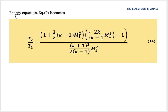The energy equation (equation 9) can be rewritten as equation 14: T₂/T₁ = [1 + ½(K−1)M₁²] × [2K/(K−1) × M₁² − 1] / {[(K+1)² / (2(K−1))] × M₁²}.